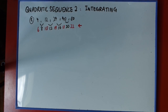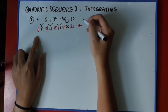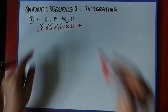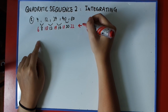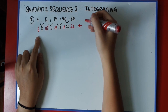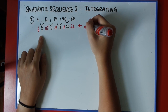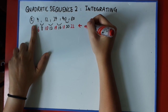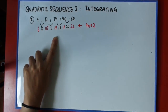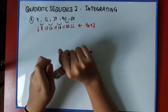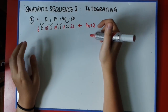Now what I want you to do next is to only look at the red sequence — ignore the black sequence. So what is the formula of this red sequence? Hopefully you have watched the video on linear sequences. It starts with 6, and then it adds 4 each time. So it'll be 4n plus 2.